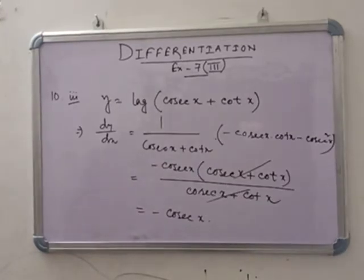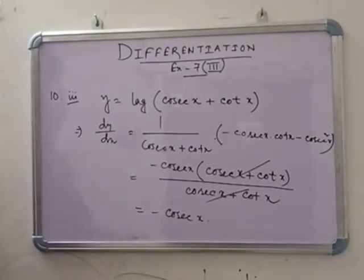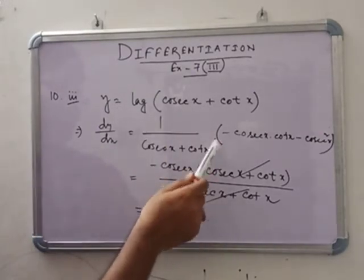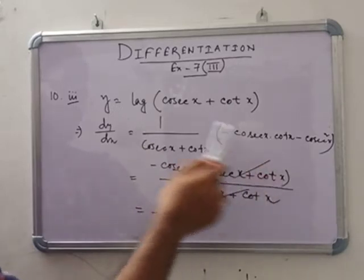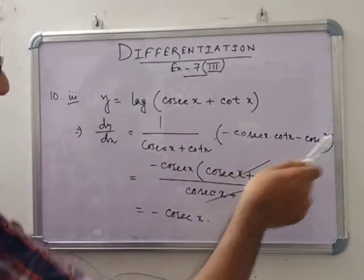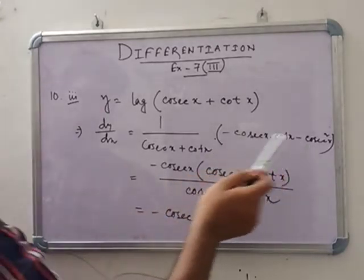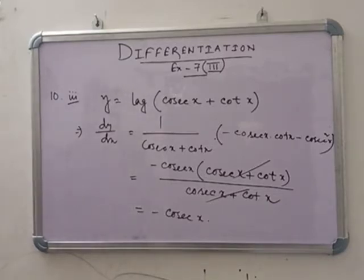In number 10a3, given y = log(cosec x + cot x). So dy/dx = 1/(cosec x + cot x) · (-cosec x · cot x - cosec²x). Taking common factor -cosec x from the numerator gives -cosec x(cot x + cosec x). The numerator and denominator (cosec x + cot x) cancel, leaving dy/dx = -cosec x.